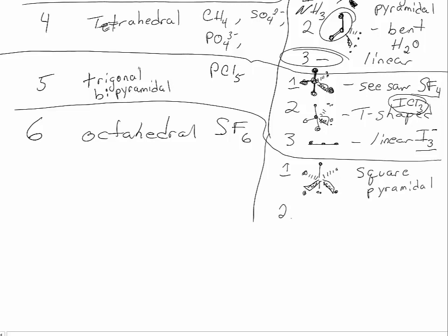Two lone pairs would like to go as far apart as possible from each other. But it's also possible that they could go together around the equator. In this case, we don't see the top or the bottom atoms because those are where the lone pairs are around the center. And so, square planar.